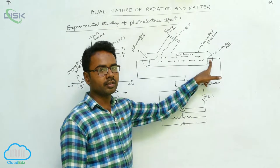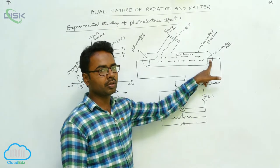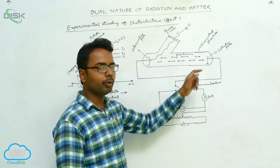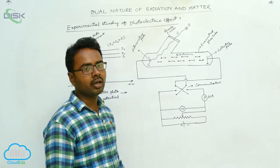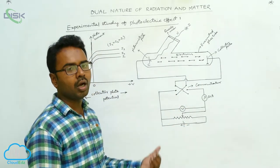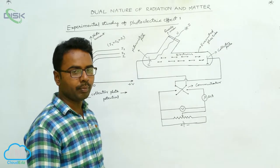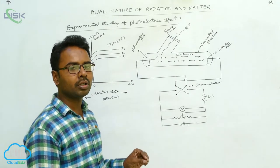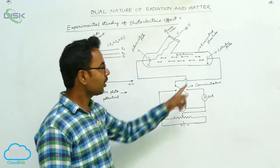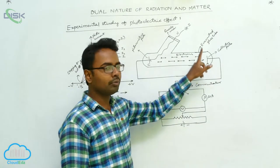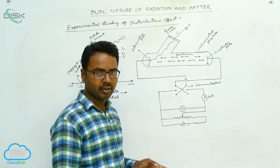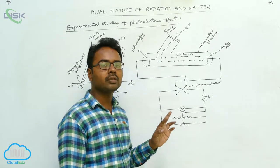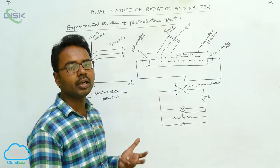Initially we are increasing the positive potential to the collector plate and observing how photocurrent changes. Later, we apply negative potential to the collector plate and also increase the negative potential, observing how photocurrent changes. We study these two cases individually.